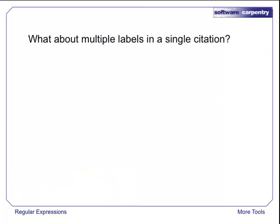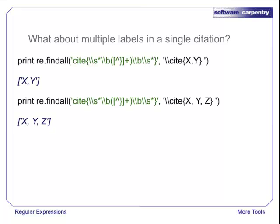The last hurdle is to handle multiple labels instead of a single pair of curly braces. The pattern we've built so far doesn't explode when there are two or more labels. It even handles spaces after the commas. But it returns all those labels as a single lump of text.